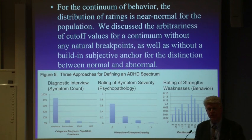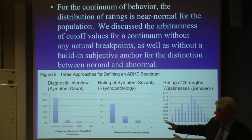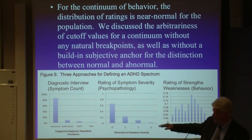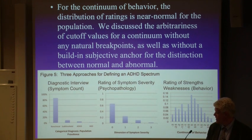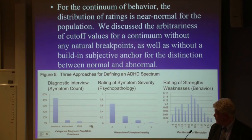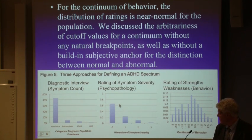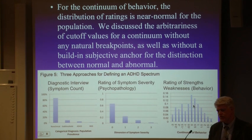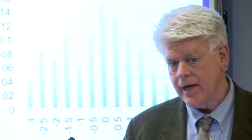The continuum of distribution has some problems too. To summarize: a categorical diagnosis produces non-clinical and sub-threshold cases; a spectrum disorder allows evaluation of those; a dimensional approach based on symptom severity gives a non-normal distribution which is problematic; and a continuum of behavior gives a normal distribution allowing proper psychometric evaluation to determine what is severe beyond a cutoff in a population sense.